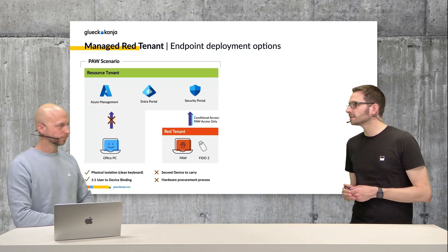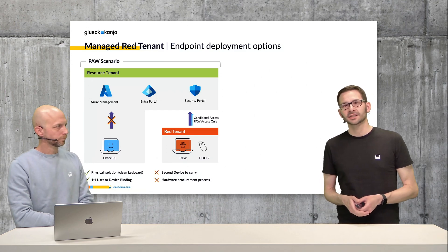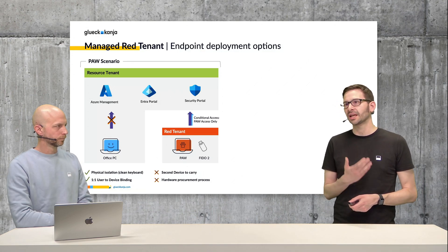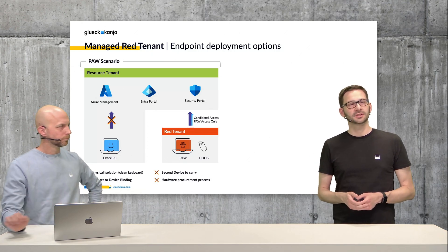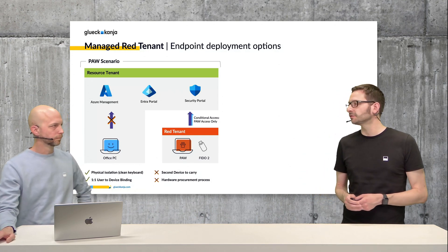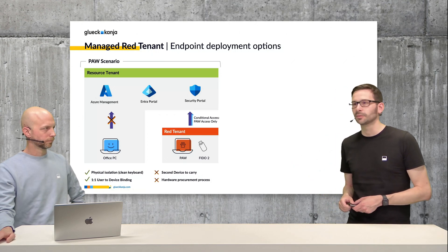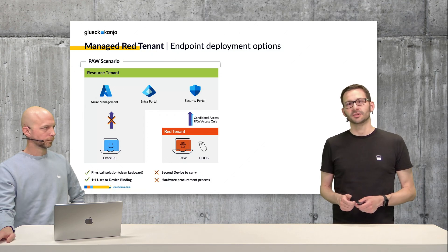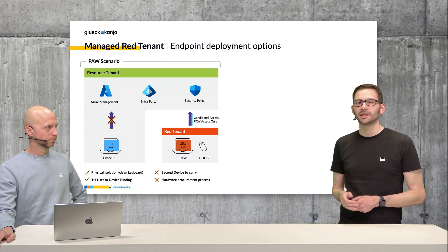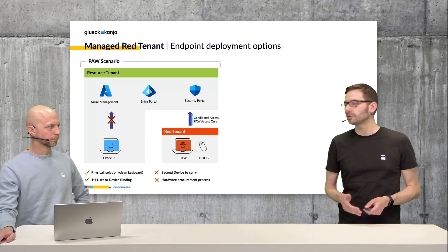We have designed the Managed Red Tenant with two deployment options for secure endpoints in mind. It's very important that privileged access is made from a fully separated device. We strongly recommend having a Privileged Admin Workstation, PAW, in place for high-privileged users like the global admin and domain admin. Conditional access will block any privileged access to privileged interfaces like the Azure portal or security portal from the Office PC. The PAW will be only used for privileged access, productivity workloads stay on the Office PC, and authentication enforces the use of FIDO2 security keys — bringing the benefit of full separation.